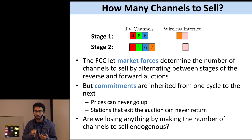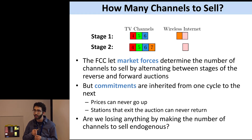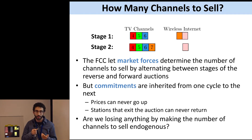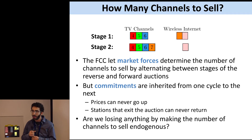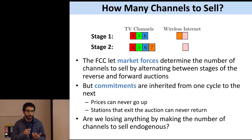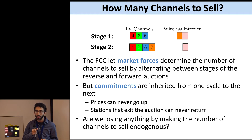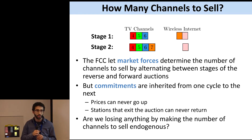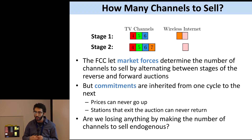The first experiment: the FCC used market forces to determine the right number of channels to sell — it wanted to sell as many channels as possible without knowing the right number in advance, hence the alternating scheme between reverse and forward auctions. One thing to worry about is that there are commitments that carry between each stage. Specifically, you can never raise a station's price, and once a station leaves the auction it's gone for good. So we were worried: is there some sort of a penalty for having this endogenous parameter of how many channels to sell?